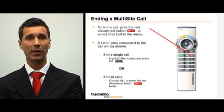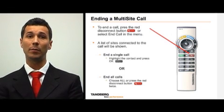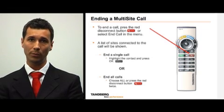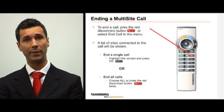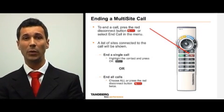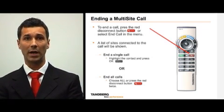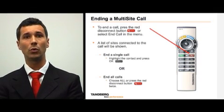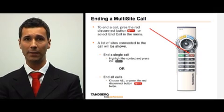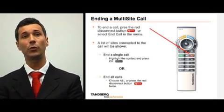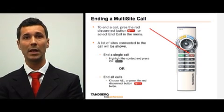To end a multi-site call, press the red disconnect button on the remote control or select End Call in the menu. This will bring up a list of the sites you are connected to. To end one call at a time, use the arrow keys on the remote control to select the call you'd like to end and hit OK. To disconnect everyone at once, simply choose All or press the red disconnect button twice.